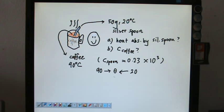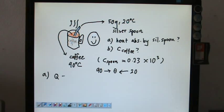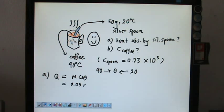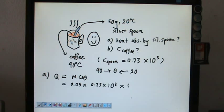Theta is the thermal equilibrium temperature. First and foremost, we want to calculate the heat absorbed by the silver spoon. For Part A, the heat absorbed by the silver spoon is Q = MC delta-theta. We have the mass of the spoon being 0.05 kg, and C of the spoon is 0.23 times 10 to the power 3.